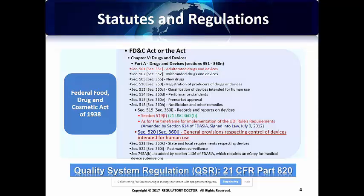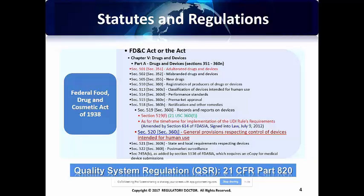Over the years, there have been a lot of amendments made to the FDCA. For example, there is a recent law enacted on July 9, 2012 — the FDA Safety and Innovation Act, known as FDASIA — that amended various sections of the FDCA. For example, FDCA Section 519(f) was amended according to FDASIA regarding unique device identification. Additionally, FDASIA Section 1136 amended FDCA Section 745A regarding e-copy requirements for medical device submissions.